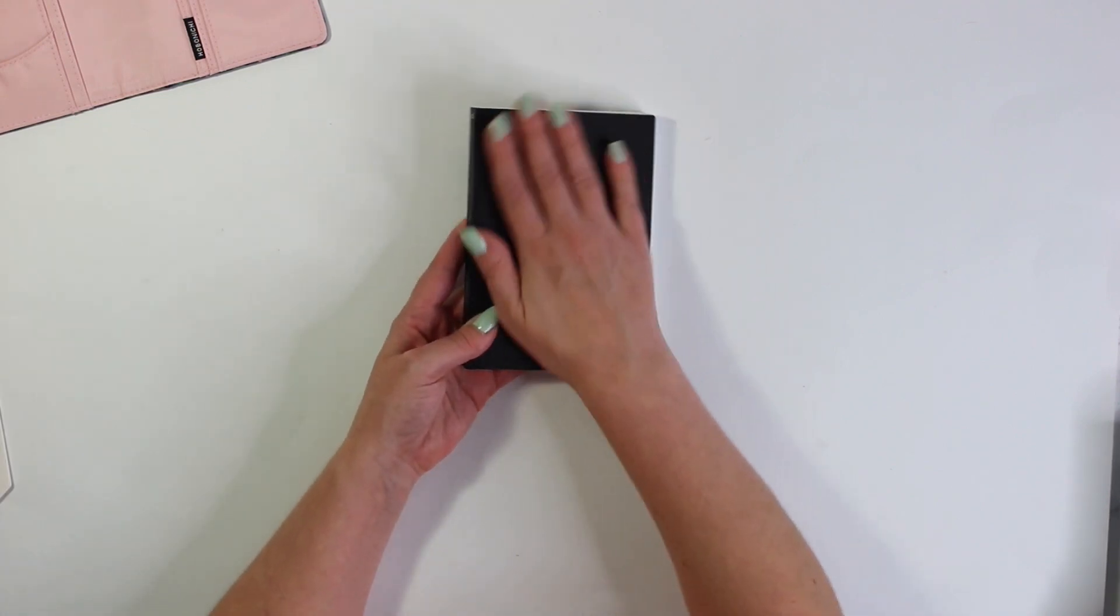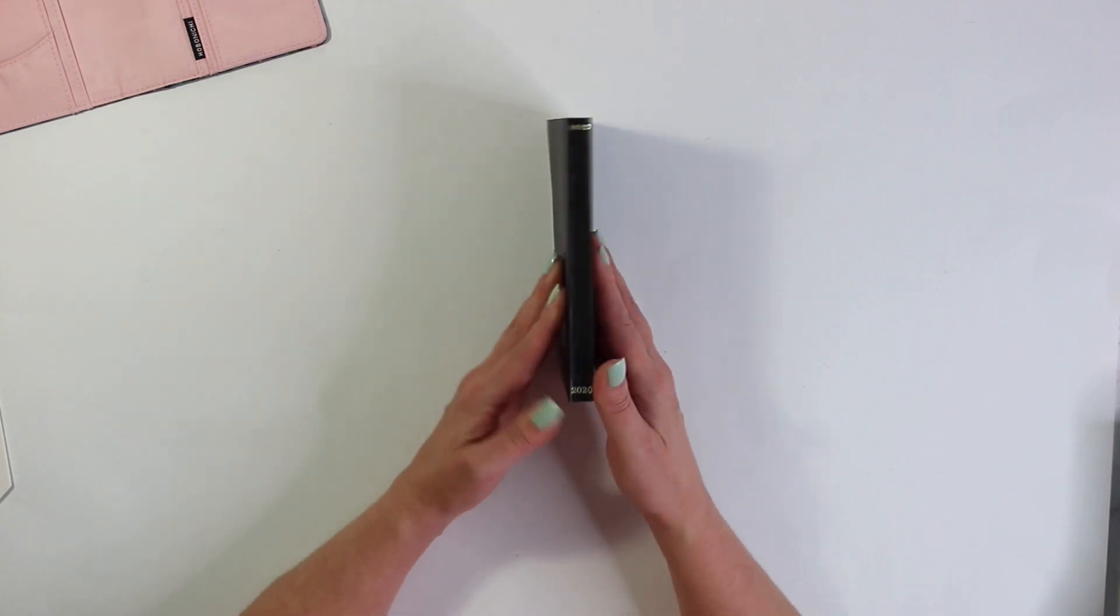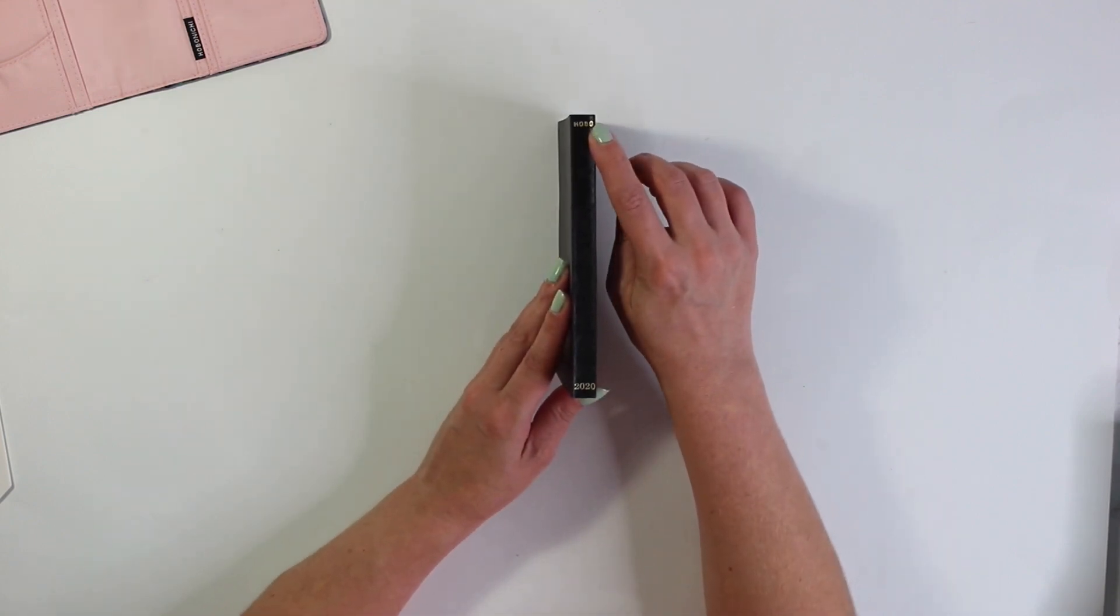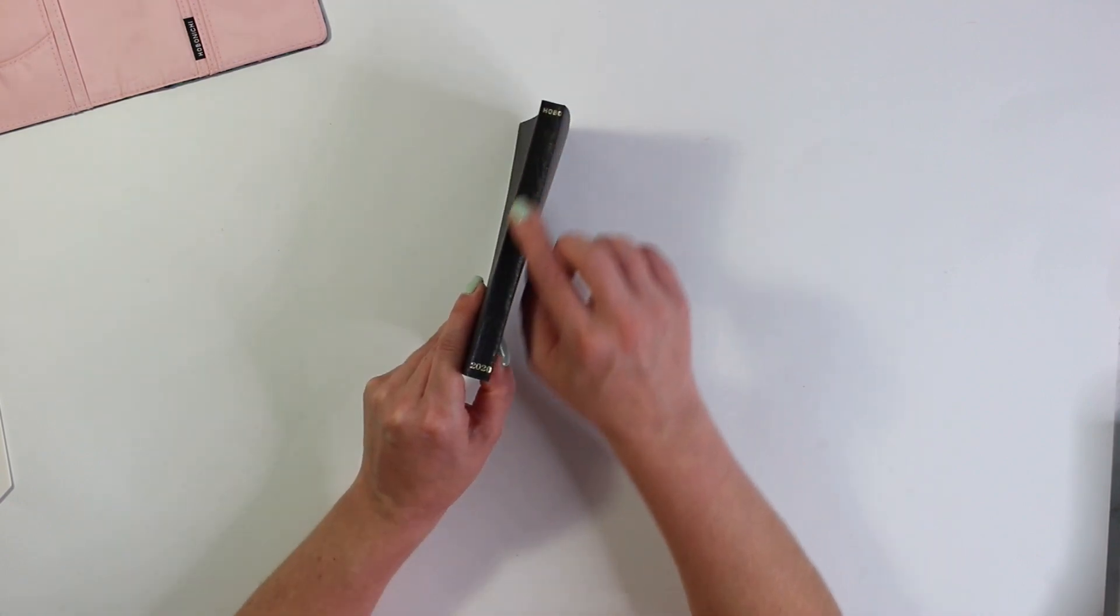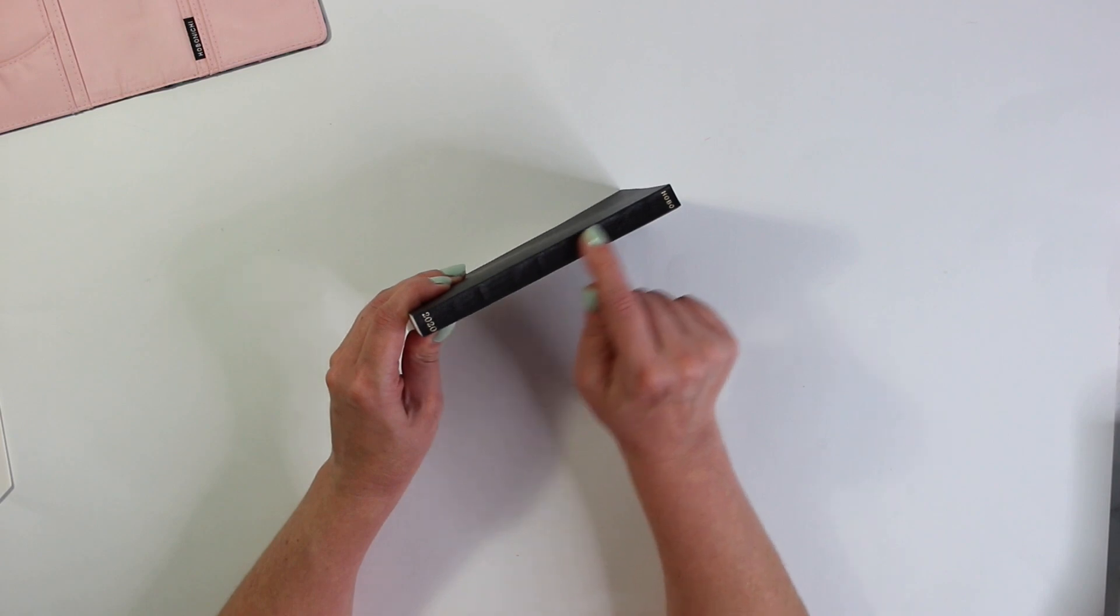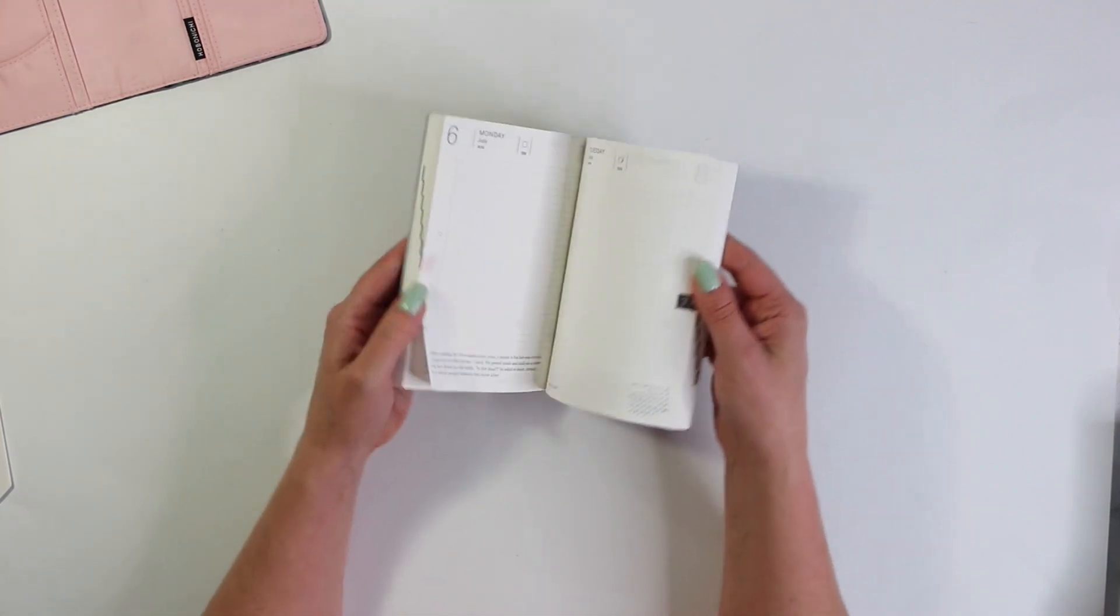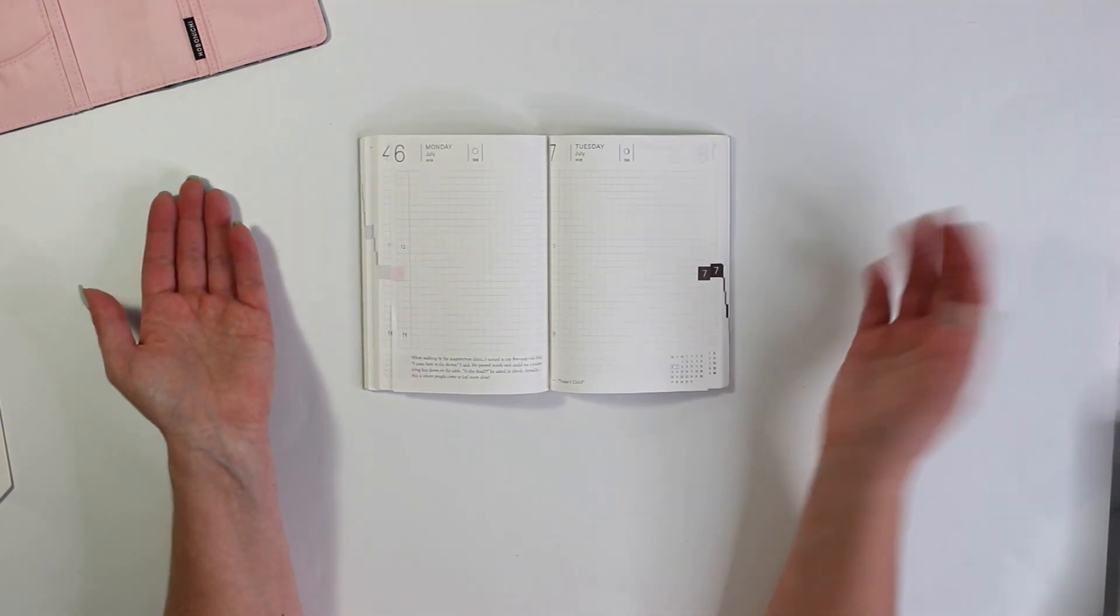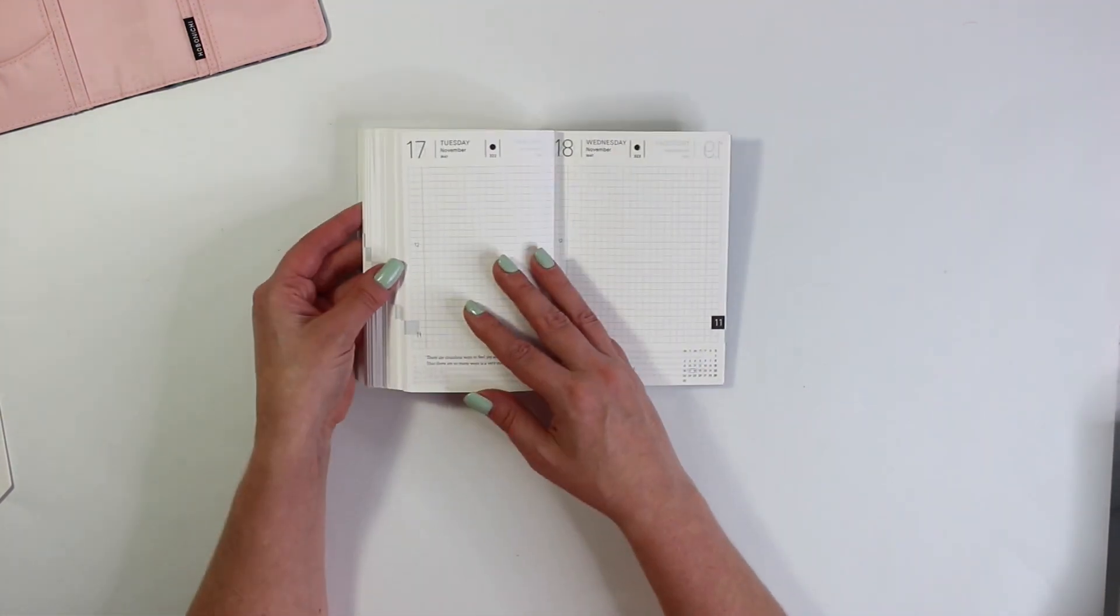Now the English version is in this black cover with the embossing on the front here. On the side it has a gold Hobo and 2020 on the bottom. Now I don't know if you guys can see the ridging in here. That is where the stitching is. So that is really nice. That is what helps this planner to stay flat whenever you open it.